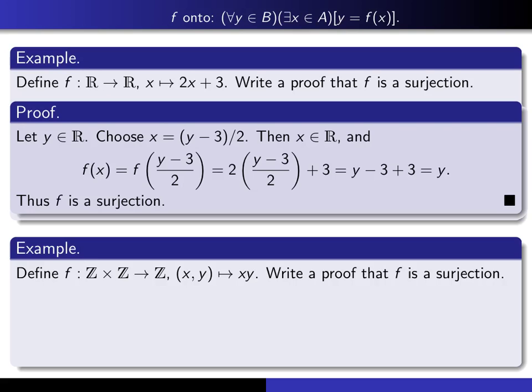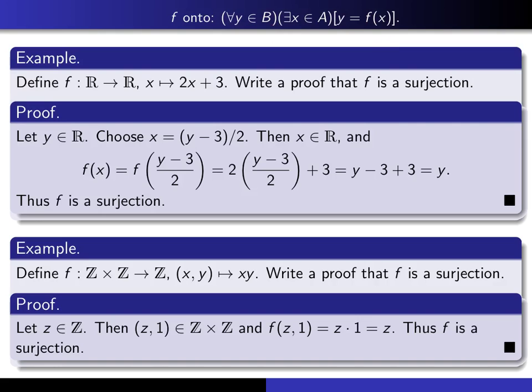Here's another example for you. Define f from Cartesian product of Z cross Z into Z. And it maps each (x, y) to x times y. Write a proof that f is a surjection. So once again, put your video on pause, and follow through this definition here. See if you can prove that it's true.